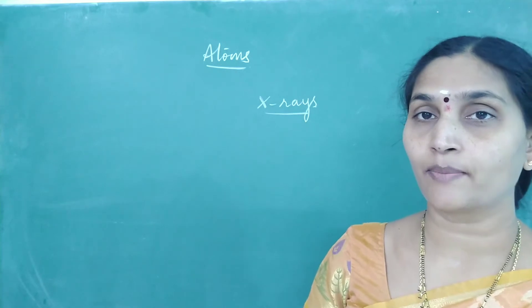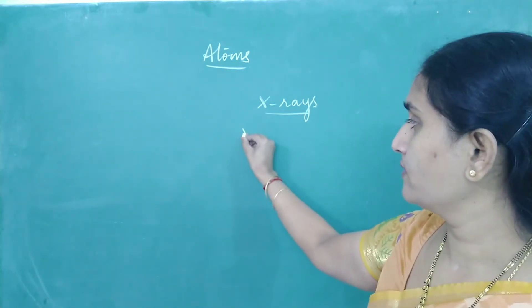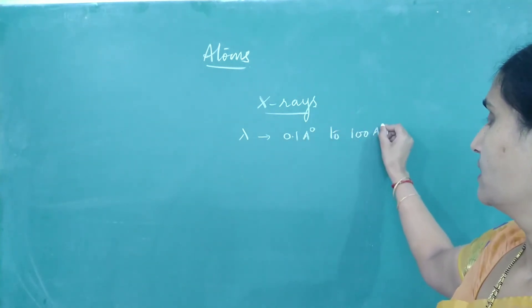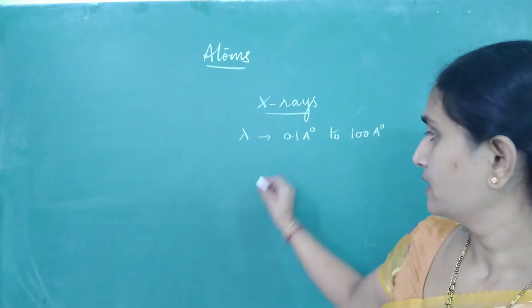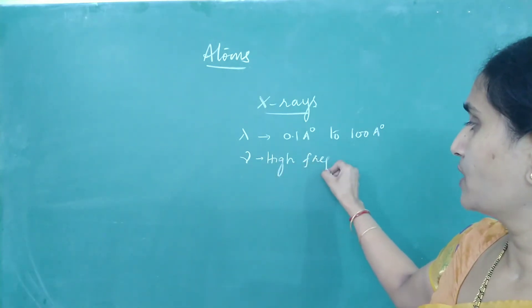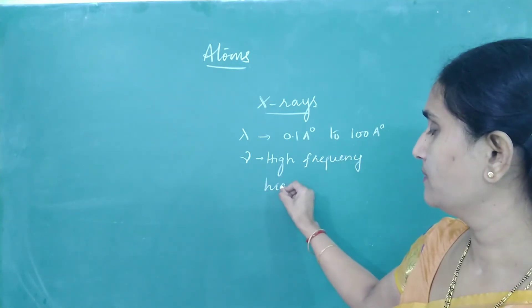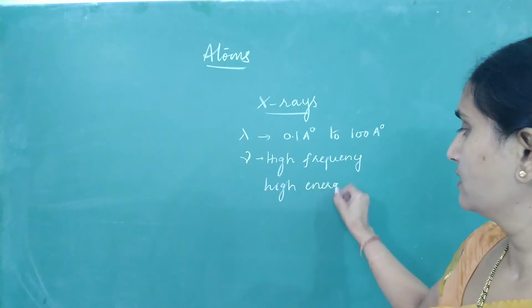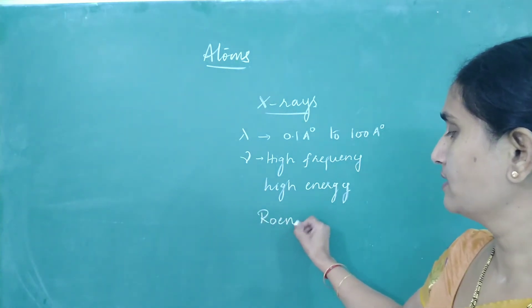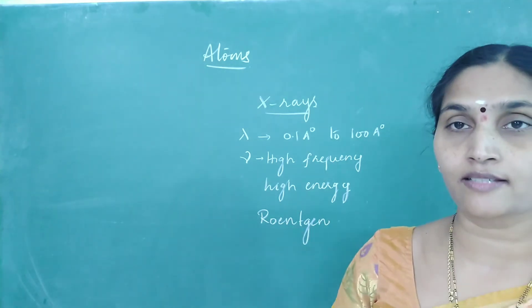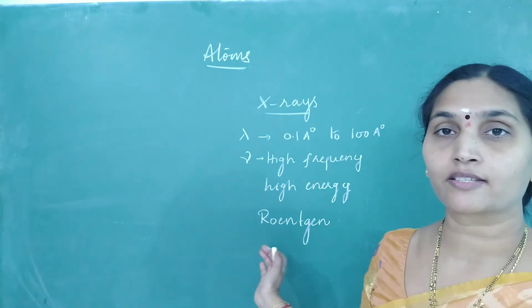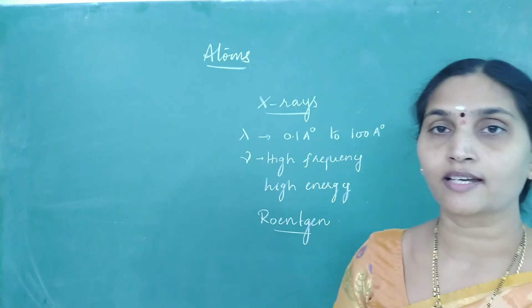X-rays are part of the electromagnetic spectrum whose wavelength ranges from 0.1 angstrom to 100 angstroms. Since they have a very small wavelength, they have a very high frequency, and if frequency is very high, they have high energy — these are high energy radiations. X-rays were first discovered by scientist Röntgen, who named them X-rays because he found some unknown rays affecting the photographic plate, undeflected by electric and magnetic fields.